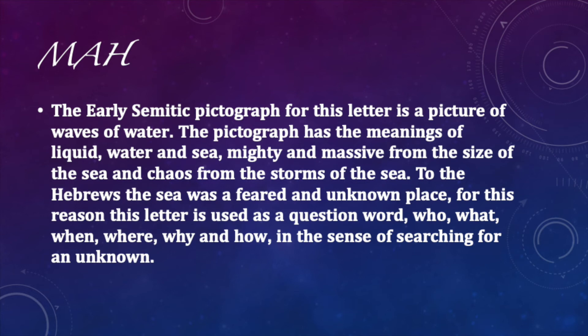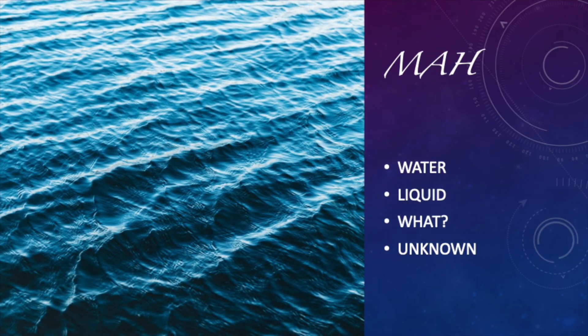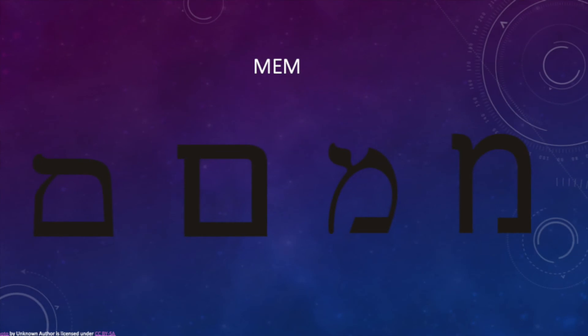The Mem is a picture of water — waves of water. It has the idea of liquid water, the sea. The sea to the Hebrews was something feared and unknown, full of massive waves, chaos, and storms. For this reason, the letter Mem has the idea of asking a question — who, what, when, where, and how. In Hebrew grammar, the word 'ma' is used to ask a question because it represents something unknown. Like when they had the manna — they were saying 'ma ma,' meaning 'what is this?'